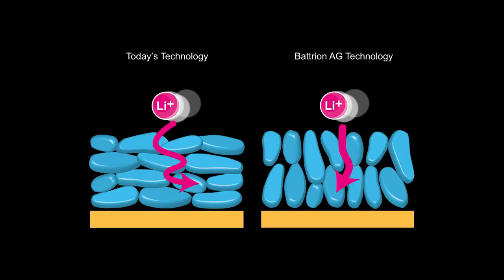A startup company out of my group is actually commercializing now a technique where we can use these superparamagnetic nanoparticles I mentioned before to actually align the graphite flakes during the battery manufacturing so we have these direct paths for lithium transport within batteries.